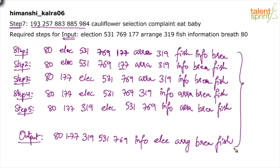This is time-consuming to explain in detail, but the advantage of writing all steps properly is that answering questions becomes very easy. For example, if a question asks how many words or numbers are between 177 and info in step five, you can look directly at your written step and count: one, two, three, four — the answer is four. It takes no time at all.